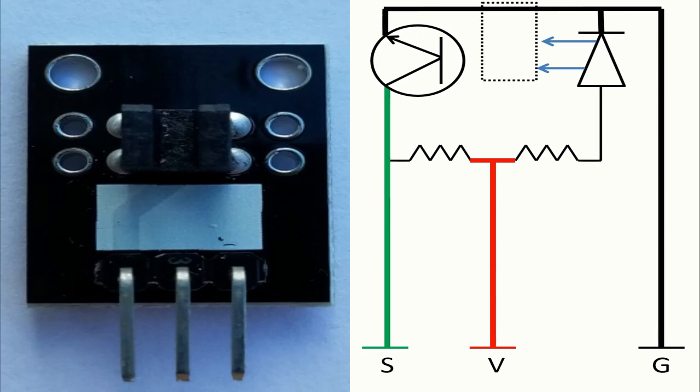The pins in this module are three. We have the ground pin with a minus sign, the voltage pin in the middle, and the signal pin with an S sign.